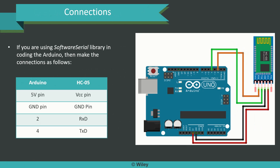Before building the code and uploading it, we need to give the connections. Here is the connection diagram for your reference. If you are using the Software Serial Library in Arduino, follow these connections: the 5V pin of Arduino connects to the VCC pin of the HC05 module, the ground pin of Arduino connects to the ground pin of HC05, pin 2 of Arduino connects to RX of HC05, and pin 4 connects to TX of HC05. Please follow the same procedure as presented in the connection diagram.